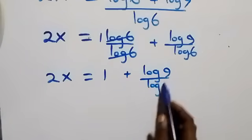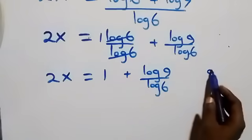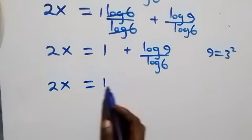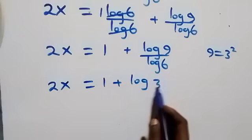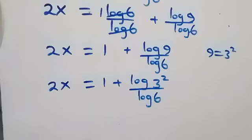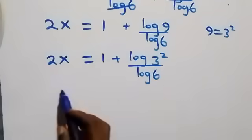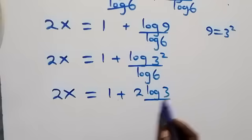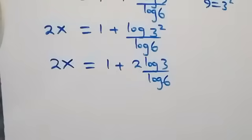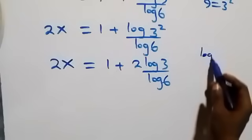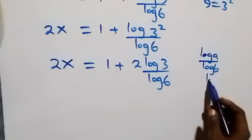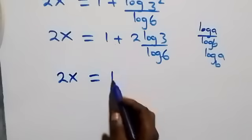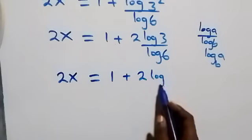Next, we express 9 as 3 times 3, which is 3 squared. What we have becomes 2x equals 1 plus log(3 squared) over log 6. Applying the power law, the 2 comes down: 2x equals 1 plus 2 log 3 over log 6. We can then apply the change of base rule — log a over log b equals log a to base b — so this becomes 2x equals 1 plus 2 log₆3.